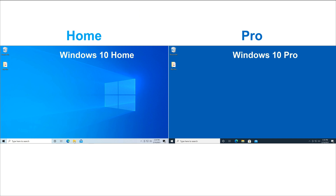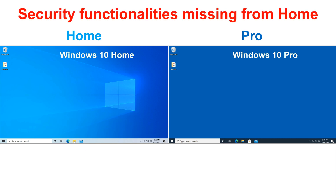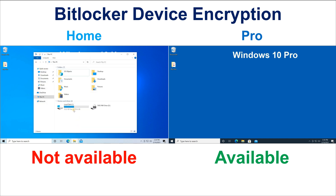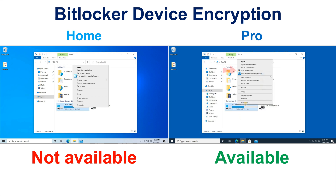Let's start with the security functionalities that are available on Windows 10 Pro and not available on Windows 10 Home. The first one is BitLocker device encryption. BitLocker device encryption protects your data by encrypting it while it is offline, in case your device is stolen or lost. The option doesn't even exist in Windows 10 Home, and it is easily accessible in Windows 10 Pro.